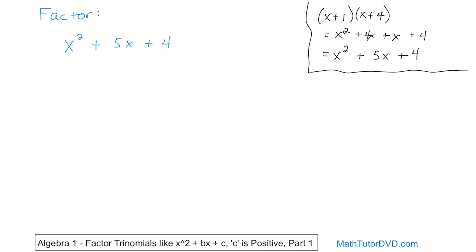What we want to do is factor it into two binomials — start with the trinomial and end up with two binomials. You write an equal sign and two sets of parentheses, each containing a binomial: something plus something. You use your knowledge of FOIL to go backwards. The first term is x squared, so the first term in each binomial multiplied together must equal x squared. The only thing that works is x times x, so put an x in each parenthesis.